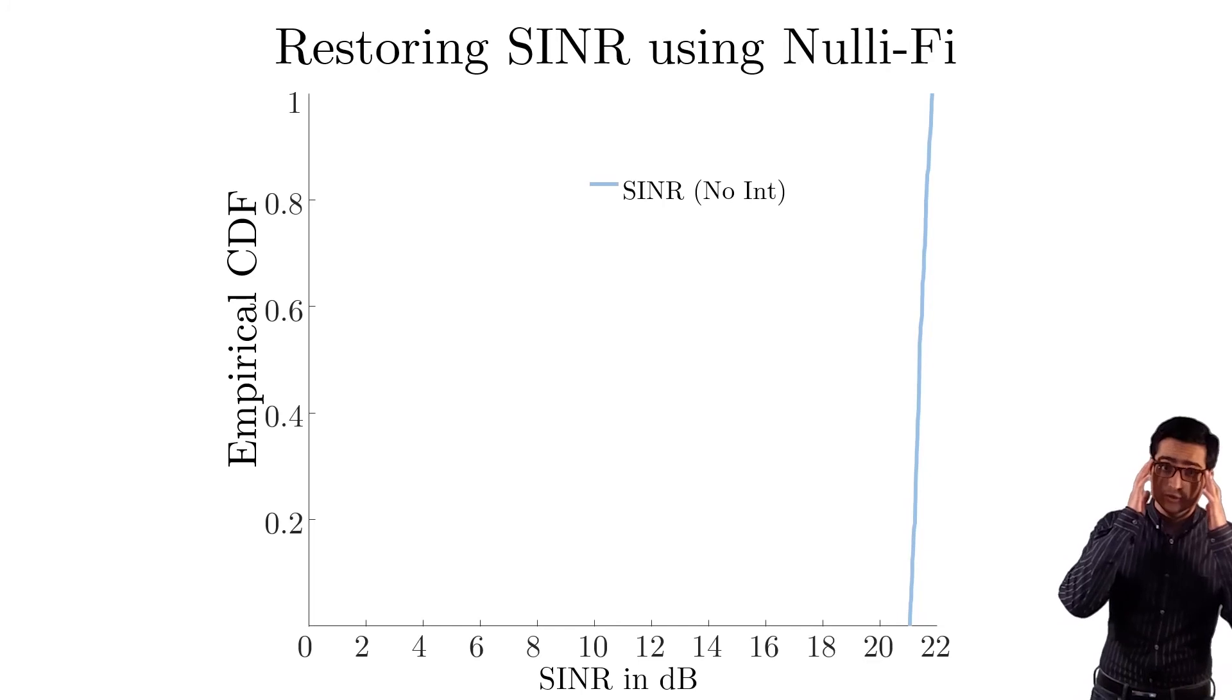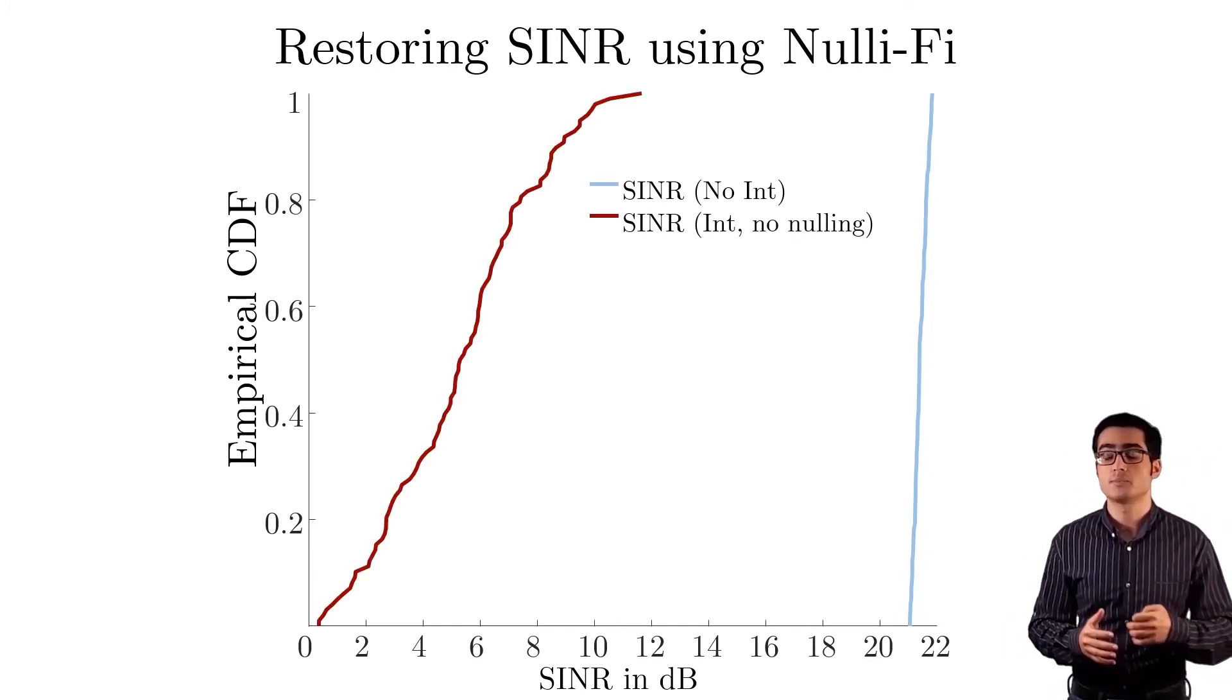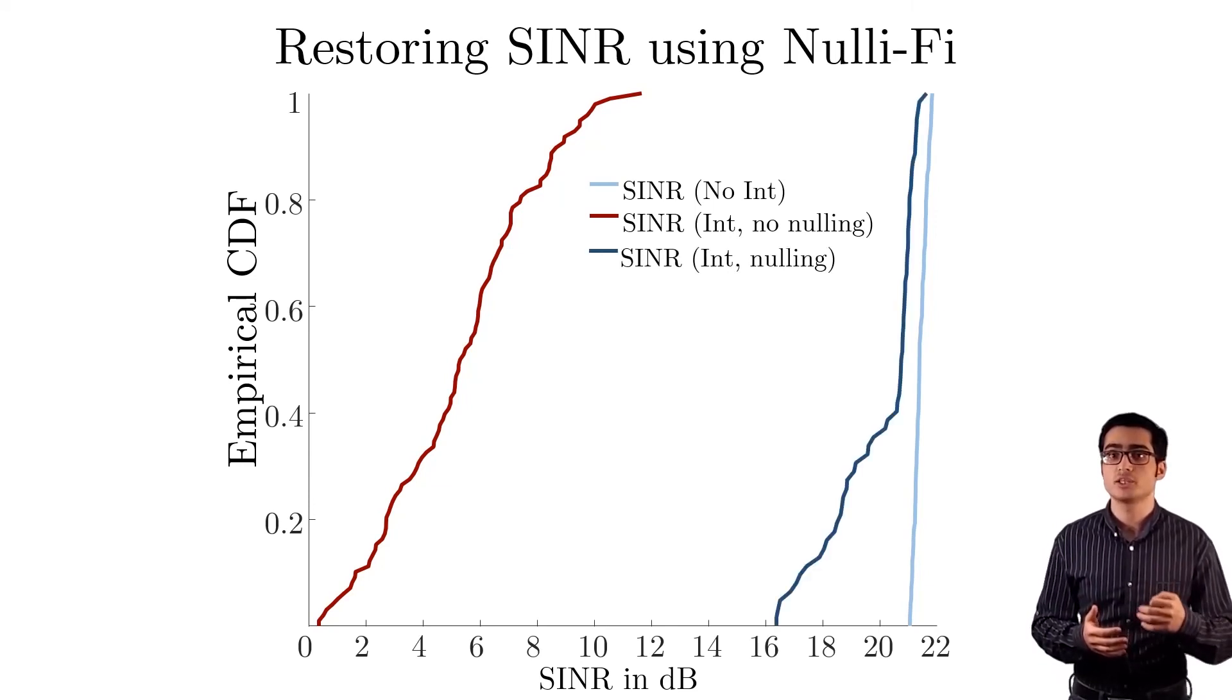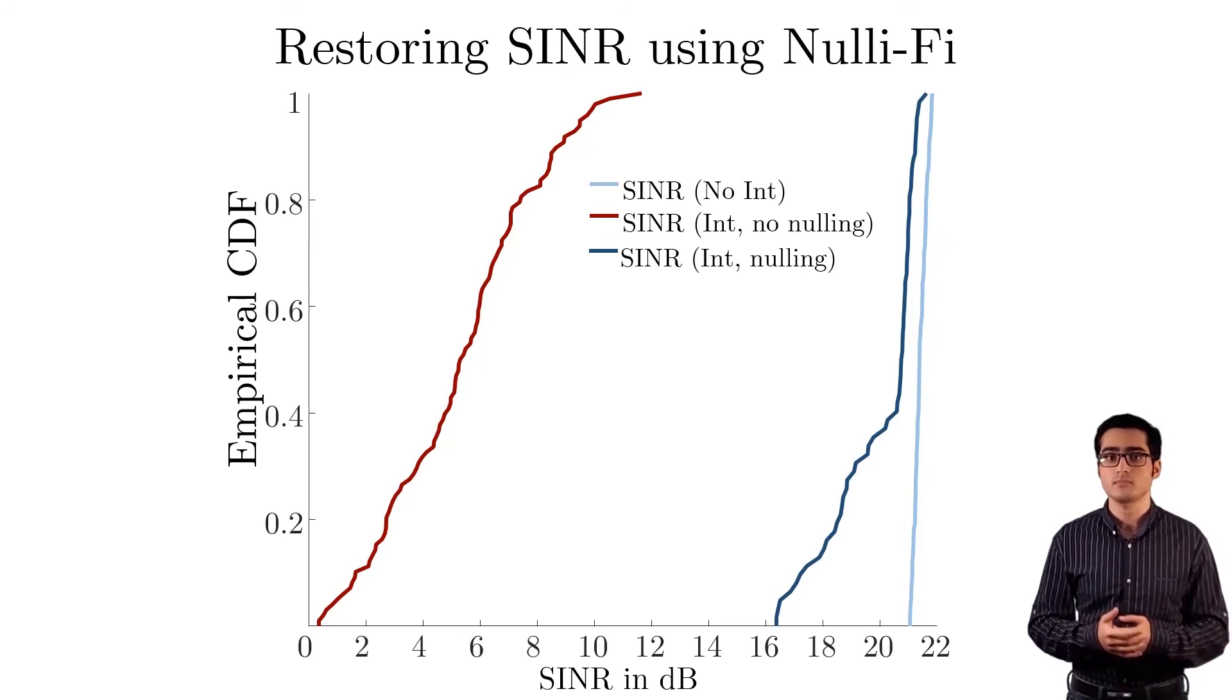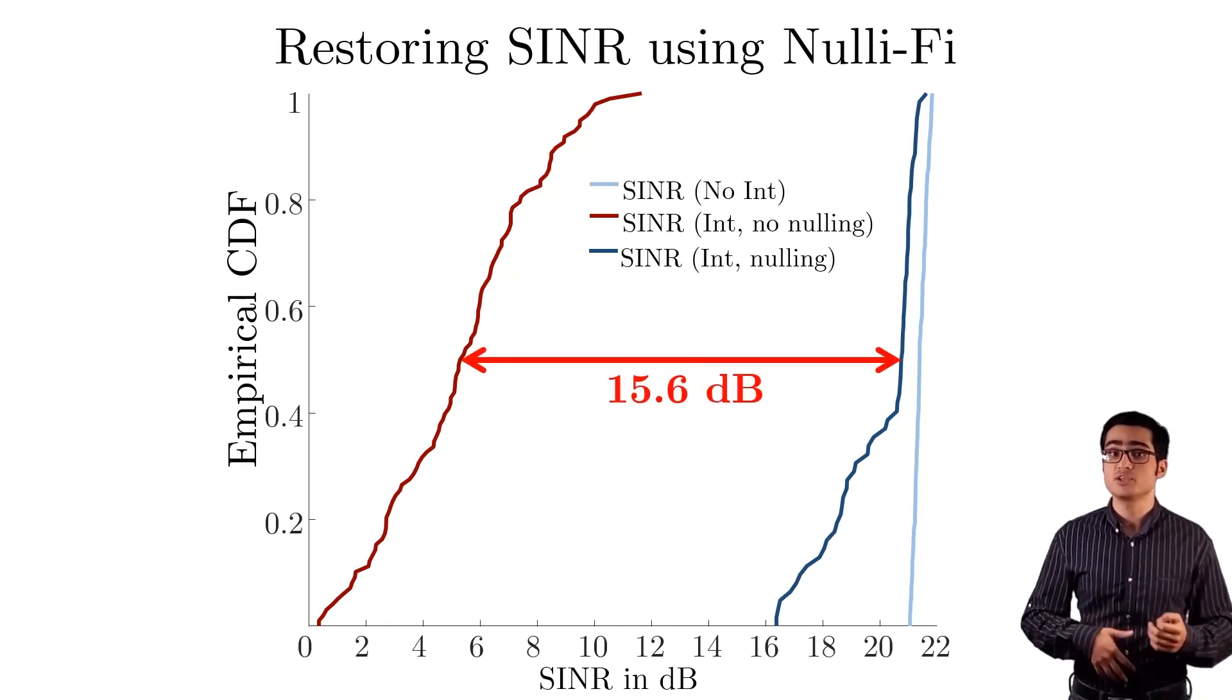Then, we introduced interference at different locations in the room, which reduced the SINR by different amounts. We then let Nullify find and null the interference, and we measured the new SINR. As we can see, Nullify improves the median SINR by more than 15 dBs, and brings the SINR close to its original value.